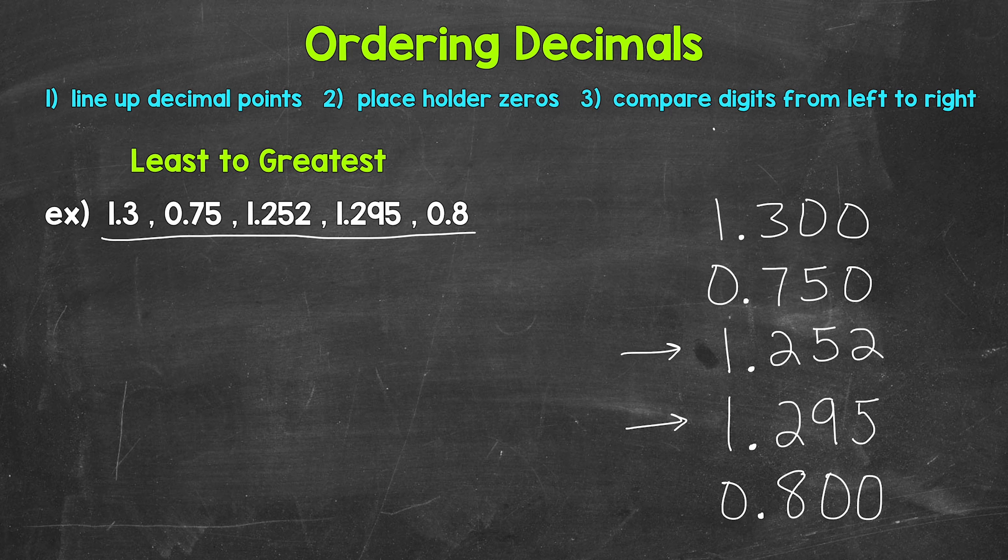We'll start with the place furthest to the left and we will work our way right. The place furthest to the left here is the ones place. So that's going to be our greatest place value.